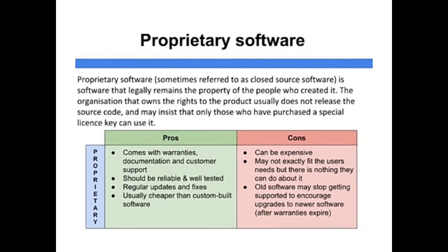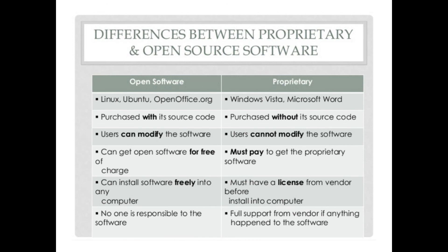Proprietary software, sometimes referred to as closed source software, is software that legally remains the property of the people who created it. The organization that owns the rights to the product usually does not release the source code and may insist that only those who have purchased a special license key can use it. There are some pros and cons of proprietary software, and here we can see the differences between proprietary and open source software. Thanks for watching the video.